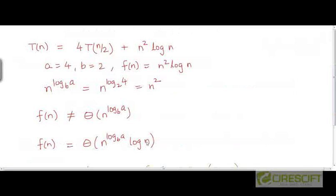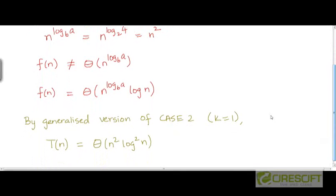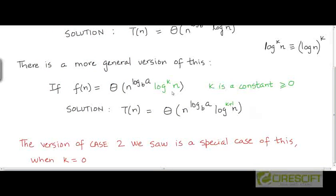The solution is T(n) = θ(n² · log²(n)). With k = 1, the generalized case says to take f(n) and multiply by an additional log n factor, so the power of log n becomes k+1 = 2 instead of k = 1. f(n) was n²·log n, and the solution has an extra log n factor: n² · log²(n), which is n² multiplied by log n times log n.